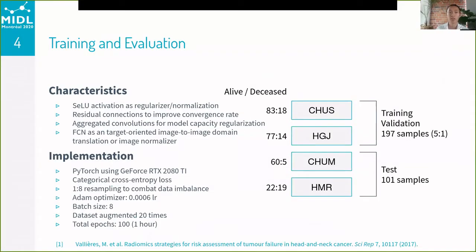In terms of training and evaluation, the training split presented by Martin Valdiak in their original 2017 paper was used. Two sites were used for training and validation purposes while two sites were kept for testing. To combat class imbalance, an 8-to-1 resampling strategy was used, which in combination with data augmentation helped model convergence.